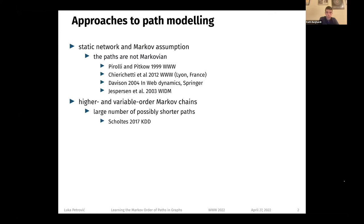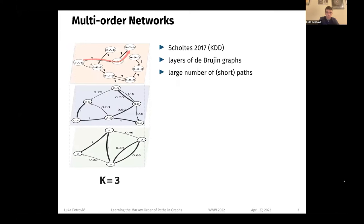The issue has been identified and addressed by Scholtes in 2017, where he introduced multi-order network models. Multi-order network models consist of layers of de Bruijn graphs, which allow them to model large number of short paths. On the left, you see a multi-order network model of order three.